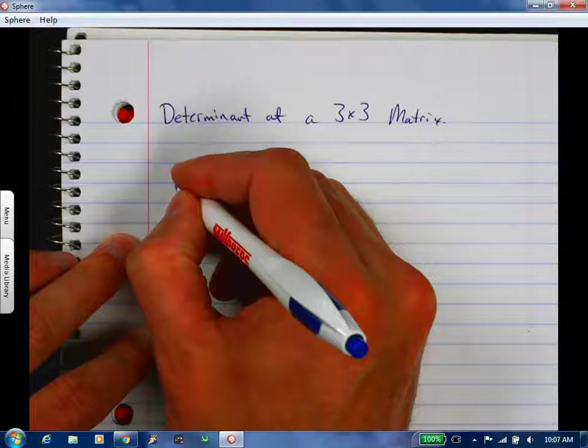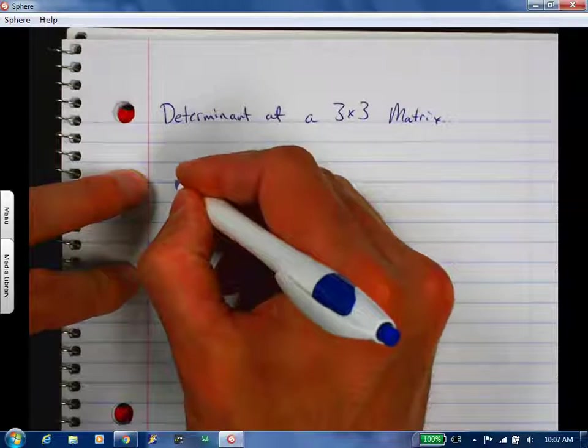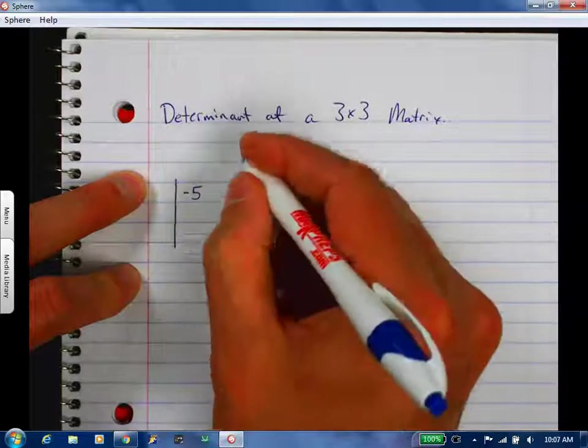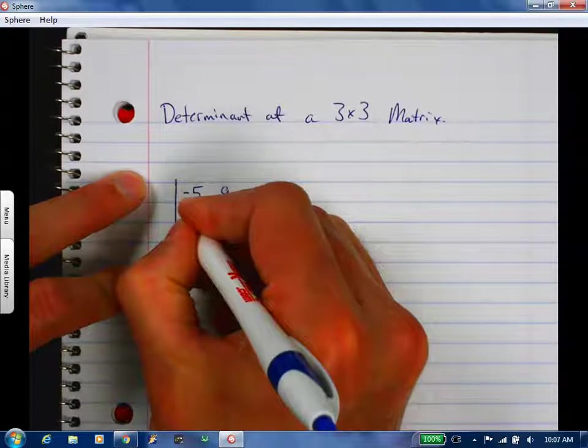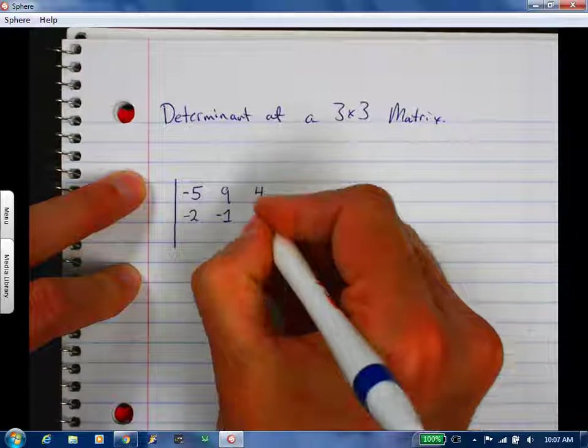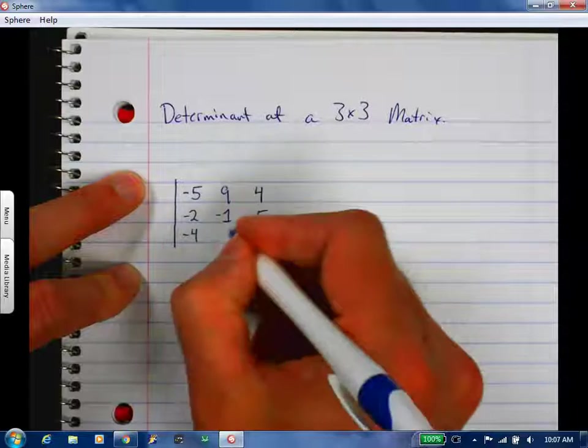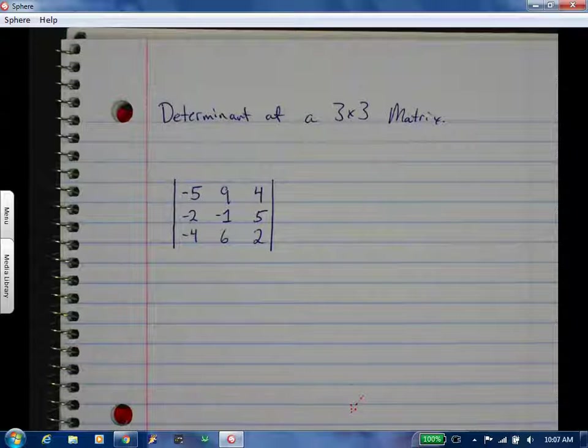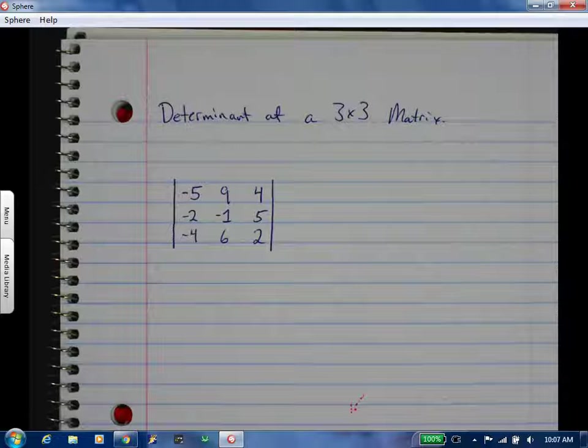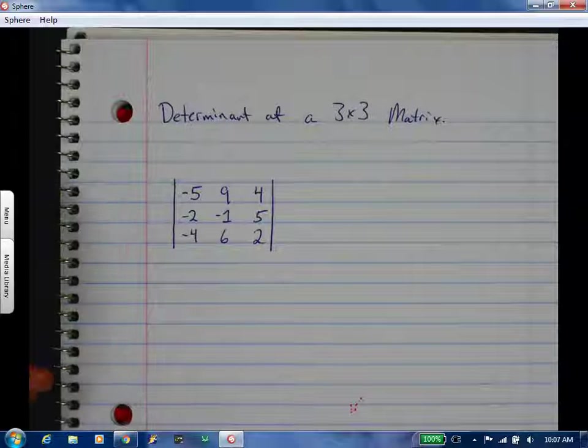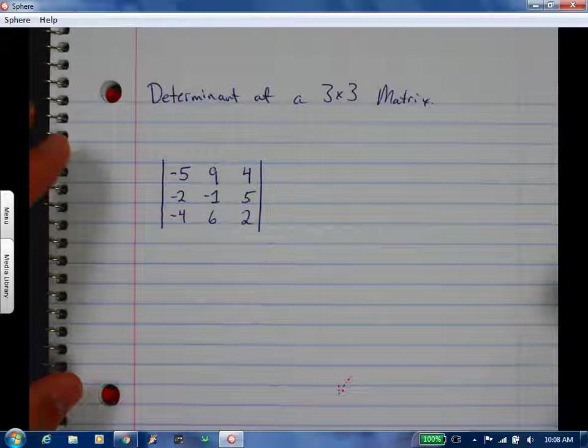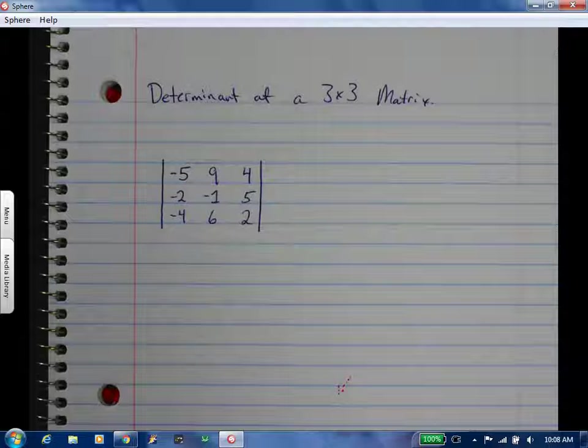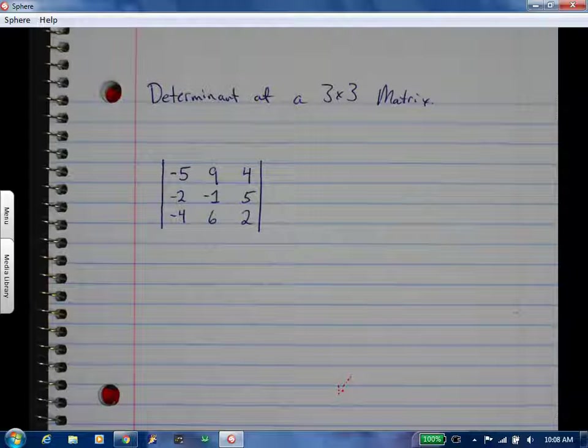Okay, so I'm going to jump down a little bit and leave a little room up top. We're going to find the determinant. Let's use these numbers: negative 5, 9, 4, negative 2, negative 1, 5, negative 4, 6, and 2. This would be like negative 5x plus 9y plus 4z equals something, negative 2x minus y plus 5z equals something, and negative 4x plus 6y plus 2z equals something.